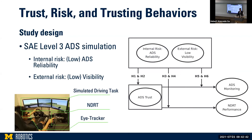In this study, we simulated an SAE level 3 ADS, meaning the vehicle could drive itself in specific conditions and the driver had to be the fallback-ready user able to take over control when requested by the AV. We manipulated two types of risk: internal risk, given by low ADS reliability represented by false alarms, and external risk, given by low visibility simulated as foggy weather. We had a research framework with six hypotheses to check the impact of risks on ADS trust and the moderating effects of risk on the relationships between trust and trusting behaviors.